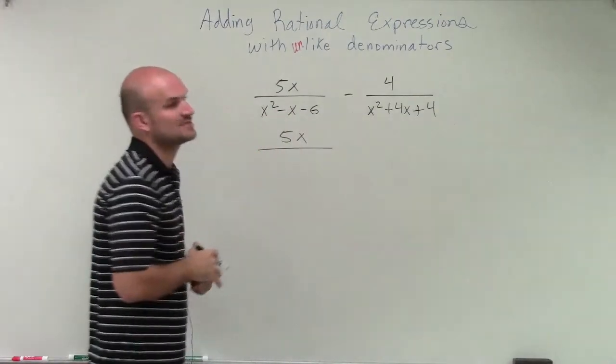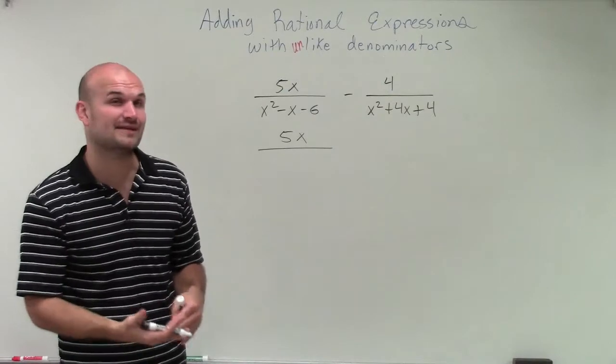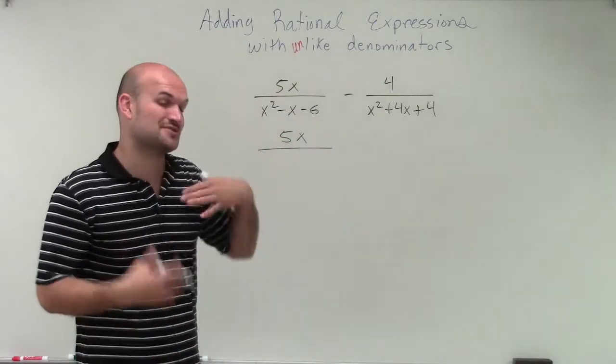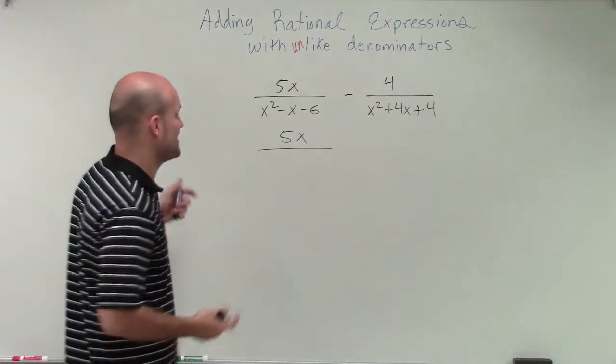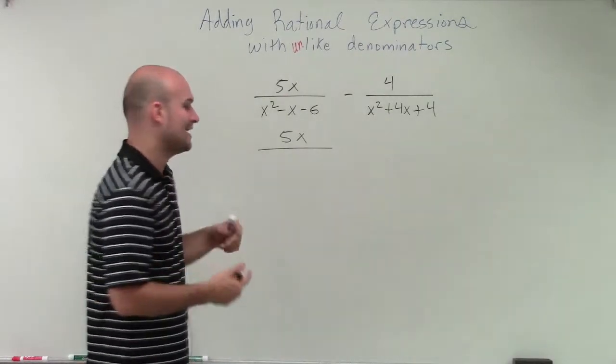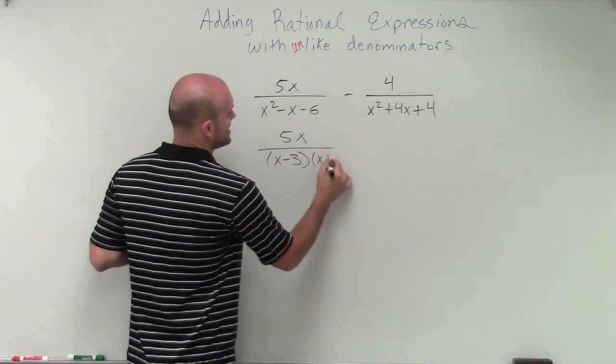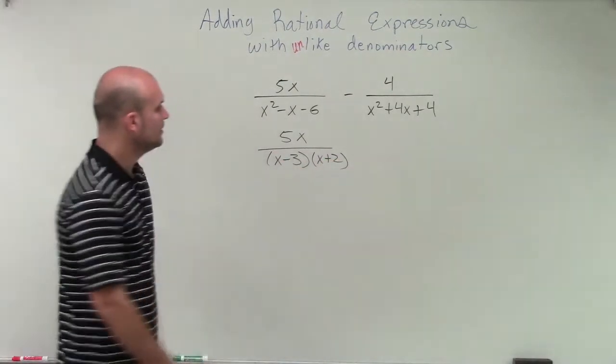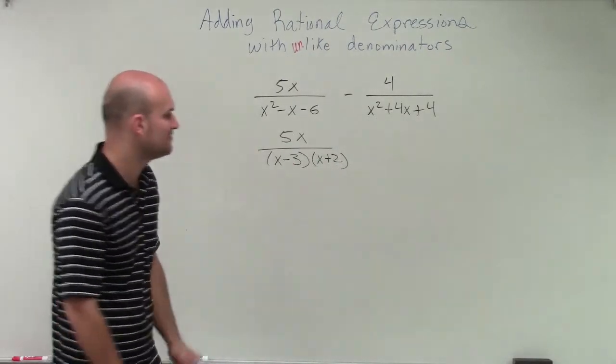So I have x squared minus x minus 6. And to factor that, remember, it's going to be what two values multiply to give me negative 6, but then add to give me negative 1. So it's really important that we're very strong with our factoring techniques here, that we can kind of do this in our head and check it. So therefore, this factored is going to be x minus 3 times x plus 2. And you can check my work by applying FOIL.